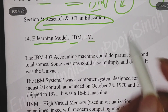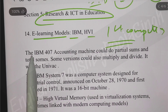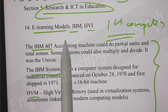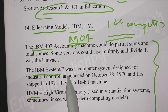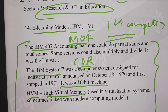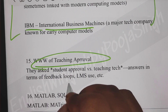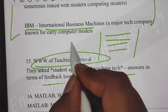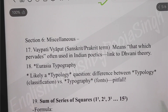In the Research and ICT section, they asked about learning models and IBM computing machines - IBM 407, IBM 7 System. These were in match-the-following or correct-the-statement format. IBM stands for International Business Machines. They also asked about teaching approaches like student versus LMS feedback loops - the correct order of when to teach, the basics of teaching methods. We have already discussed these.